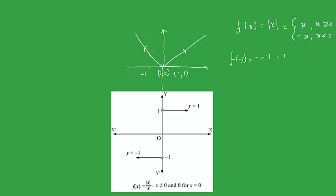Next is the graph of the signum function. It is also defined as f(x) equals |x| over x where x is not equal to 0, and 0 for x equal to 0. From the definition: if x is greater than 0, meaning x lies on the right side of the y-axis, the value comes out to be 1. If x is on the left side of the y-axis, the value comes out to be minus 1. And at x equal to 0, the value is 0.